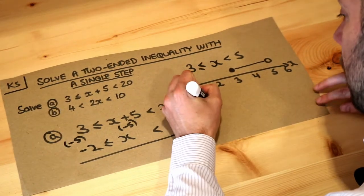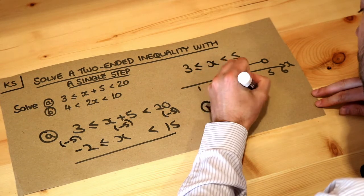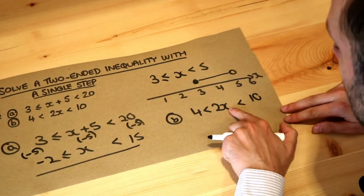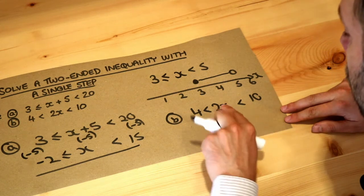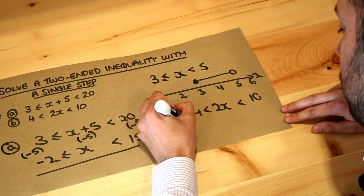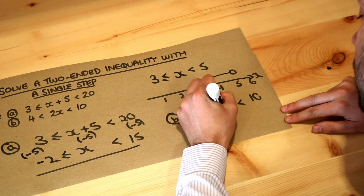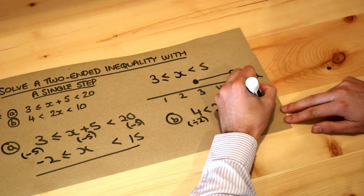What about the other one, b? So 4 is less than 2x is less than 10. Now x has been multiplied by 2, we want to get rid of that times by 2, so we divide everything, the left, the middle, and the right by 2.